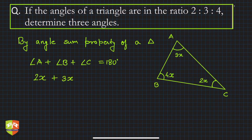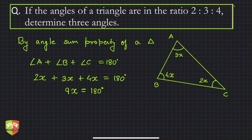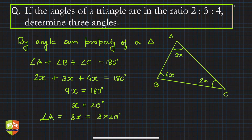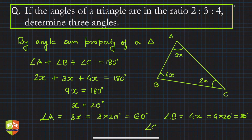So 2x + 3x + 4x = 9x = 180 degrees. Therefore x = 20 degrees. So angle A is 3x = 3 × 20 = 60 degrees, angle B is 4x = 4 × 20 = 80 degrees.